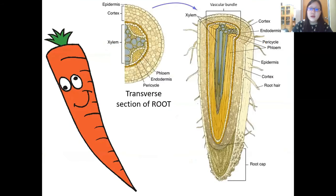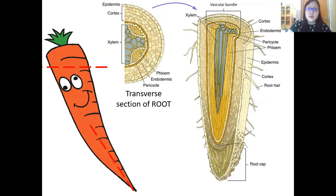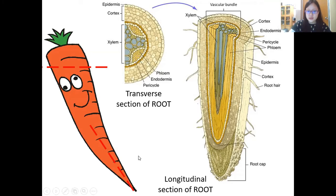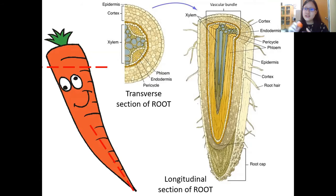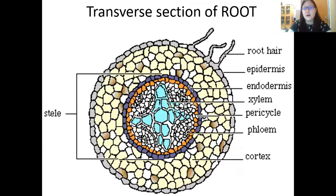To look at each organ, we can't just look at the outside — we have to cut it and examine it under a microscope. We can cut it two ways: a transverse section, which is a cross-cut, and a longitudinal section, which is cut lengthways. Carrots are also roots, so I like to use a carrot as an example. This here is a transverse section — you can see it's round.